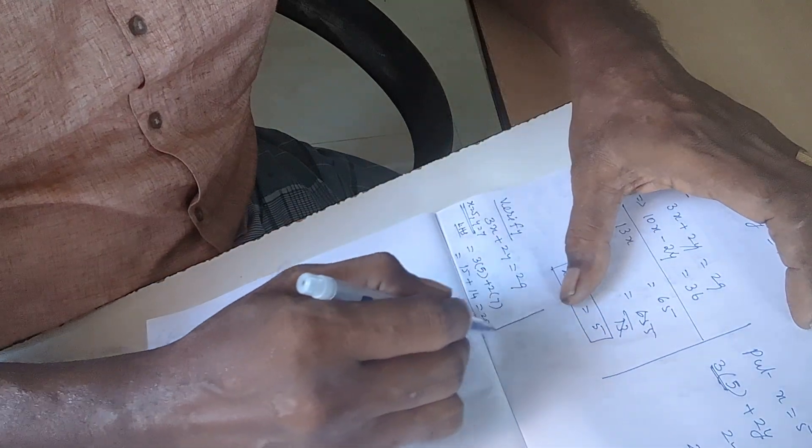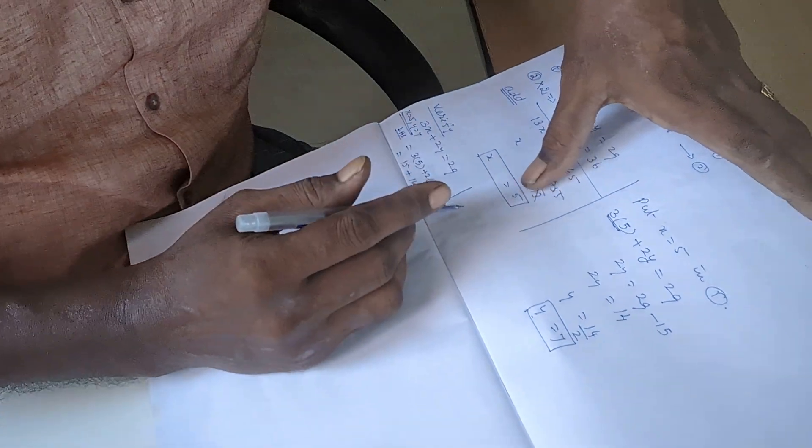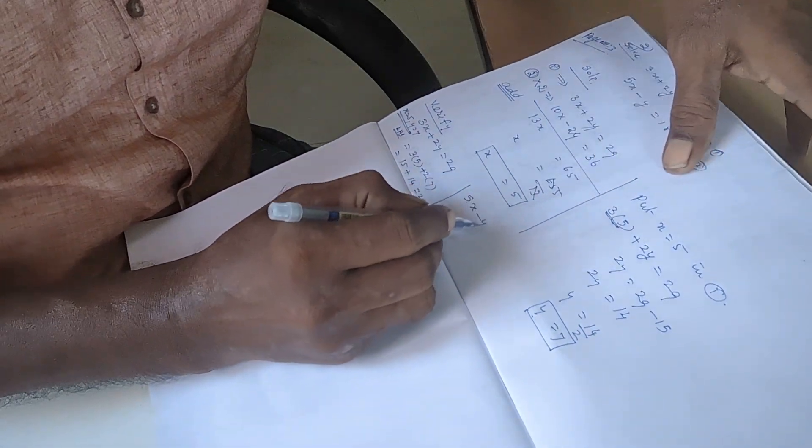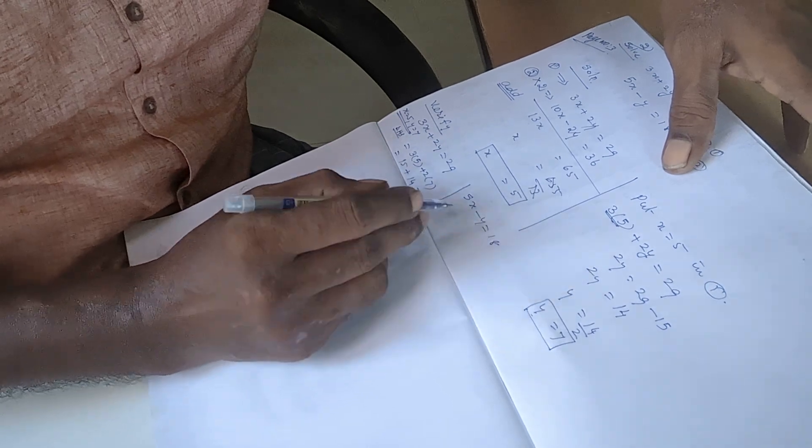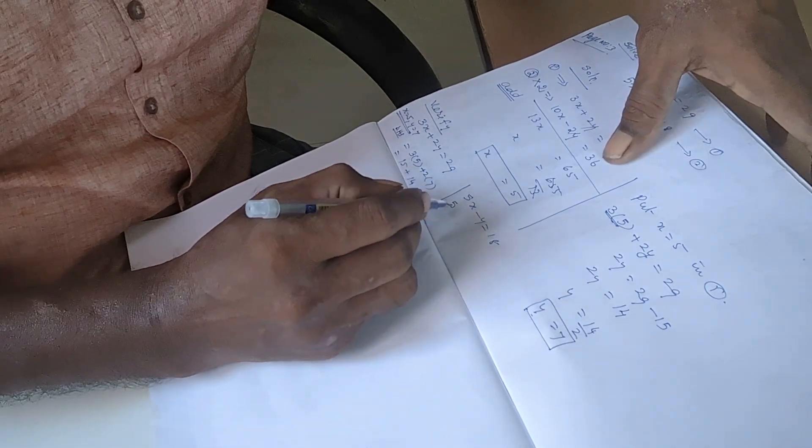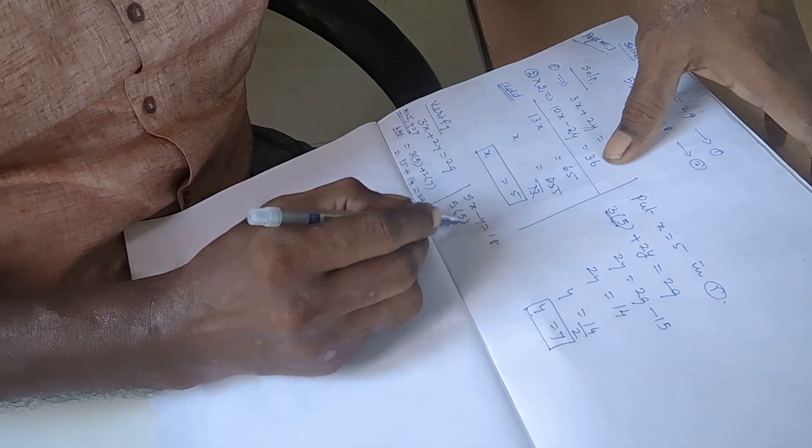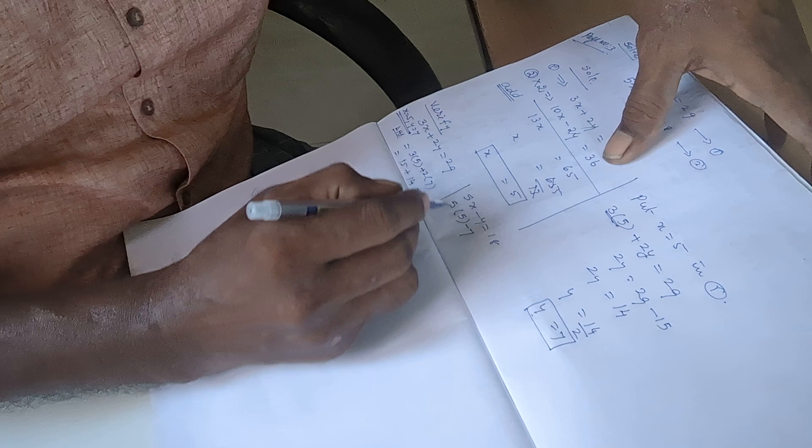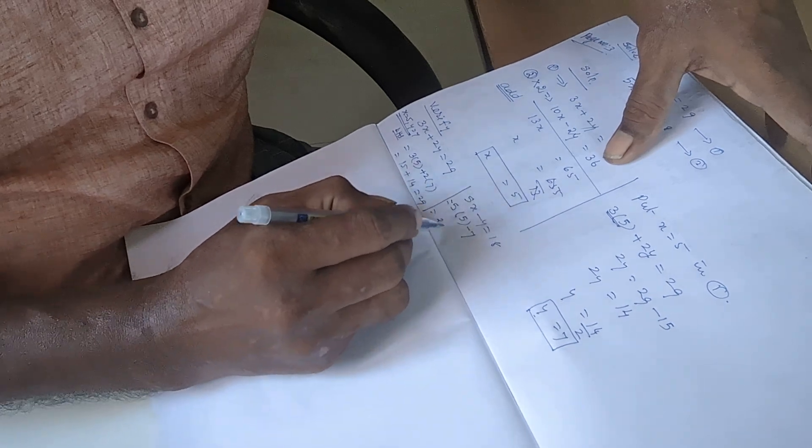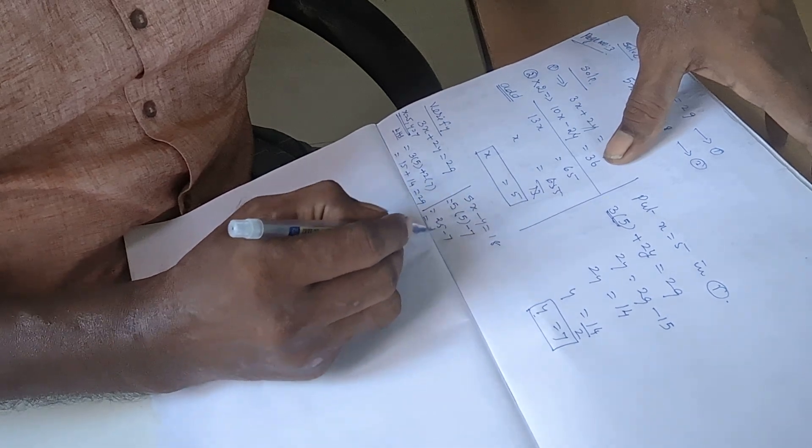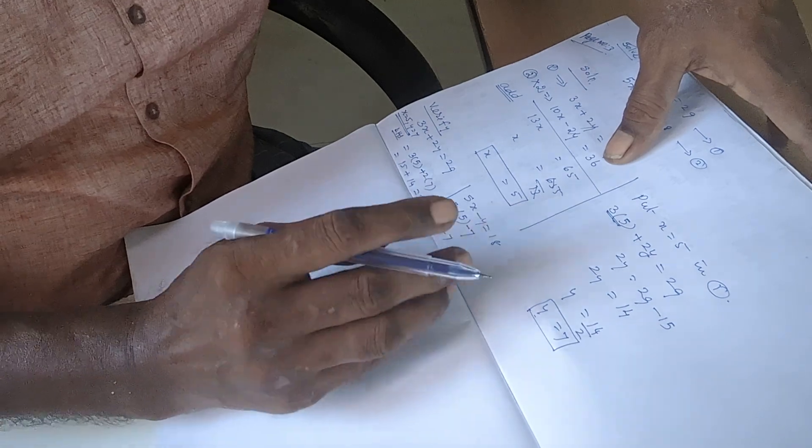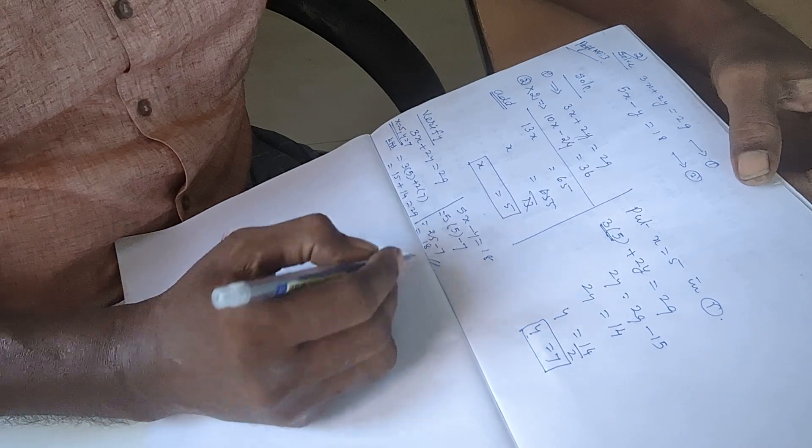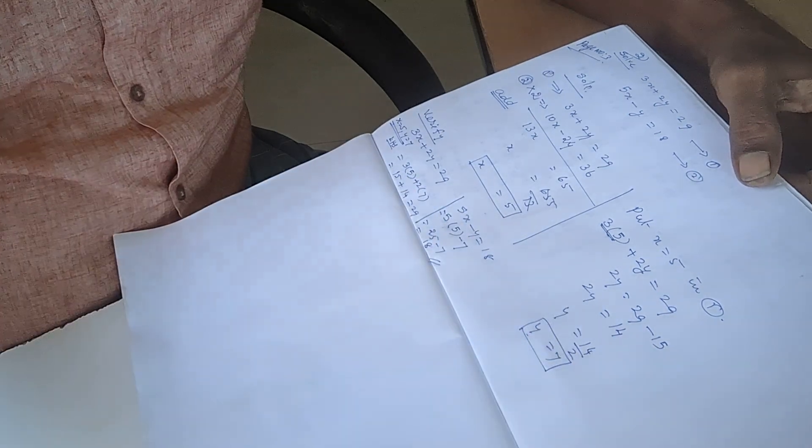Now the second one: five x minus y equals eighteen. Five into x, five, minus y, y is seven. Twenty-five minus seven equals eighteen. So both are verified. Yes. Thank you for watching this video.